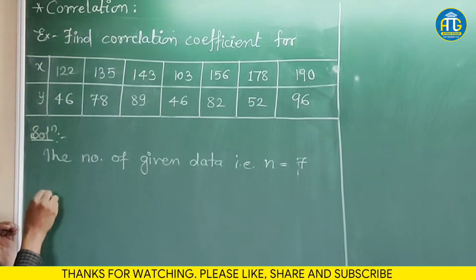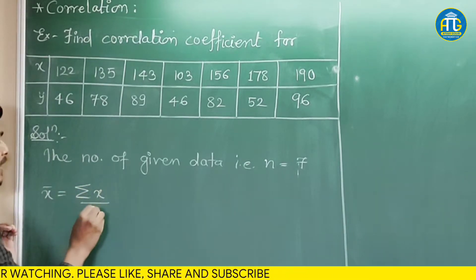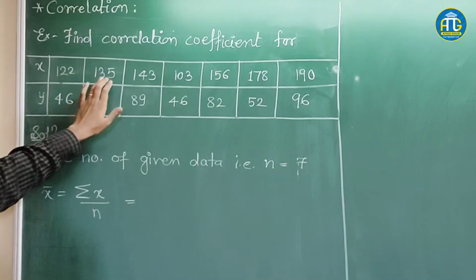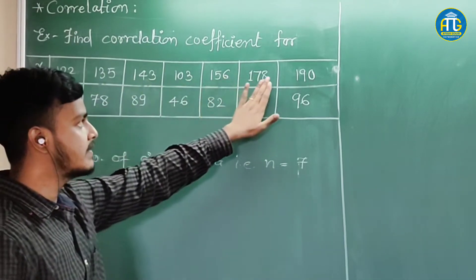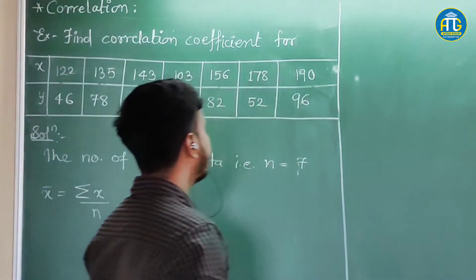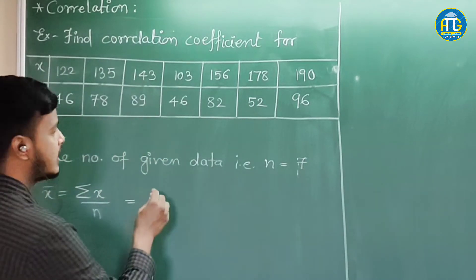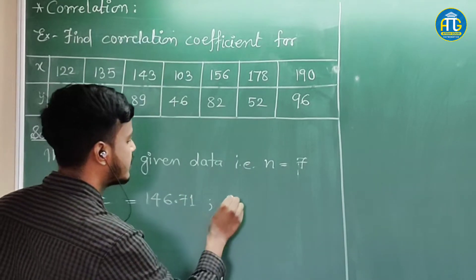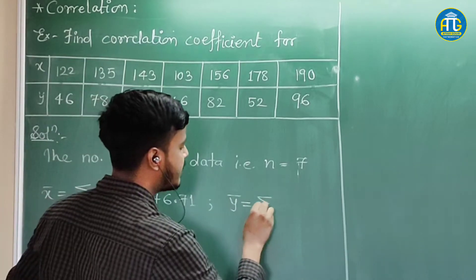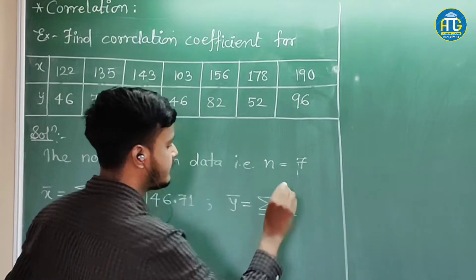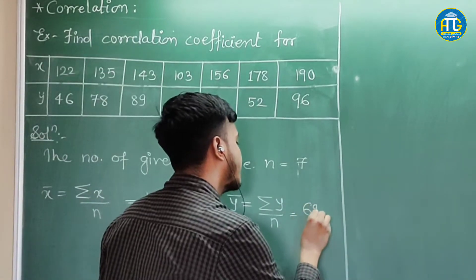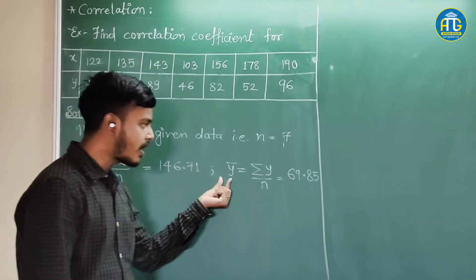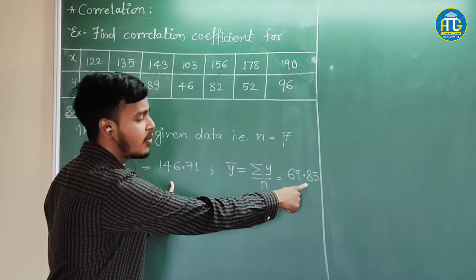Now let us find out the mean values. x-bar is equal to summation x by n. When you sum up all these values — 122 plus 135 plus 143 plus 103 plus 156 plus 178 plus 190 — divided by 7, you get 146.71. And likewise, the mean value of y, that is summation y by n, comes out to be 69.85. As you can see, the mean values of x and y are in fractions — they are not integers.